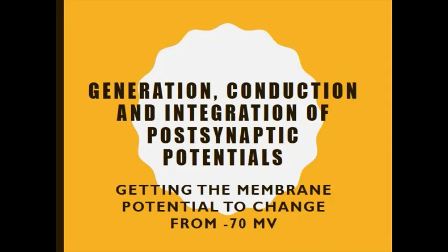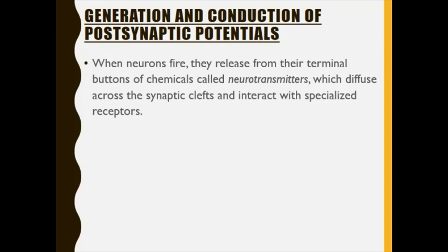Now we go to post-synaptic potentials — getting the membrane potential to change from negative 70 millivolts. We will learn the types of post-synaptic potentials and how they are conducted. When neurons fire, they release from their terminal buttons chemicals called neurotransmitters. Examples of neurotransmitters include dopamine, serotonin, cortisol, and melatonin. These neurotransmitters diffuse across the synaptic cleft and interact with specialized receptors.